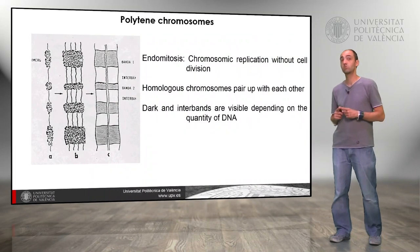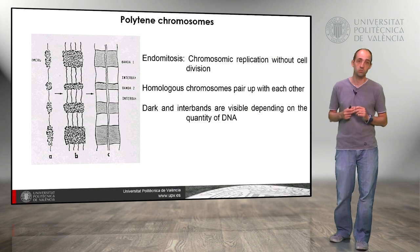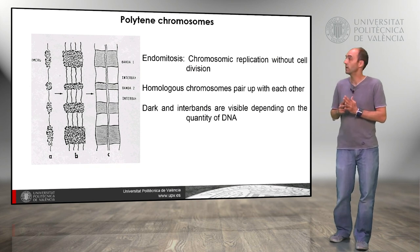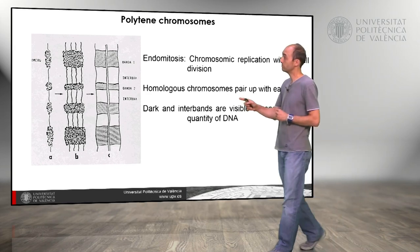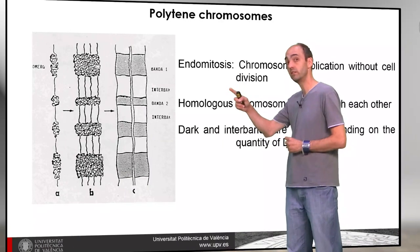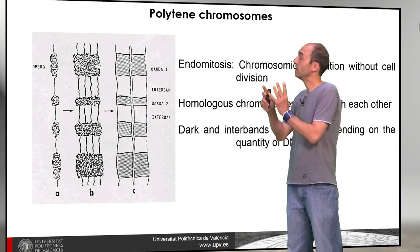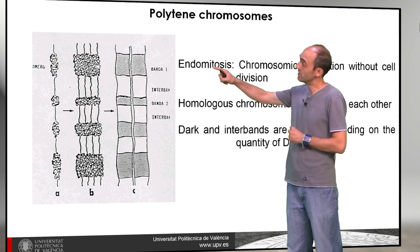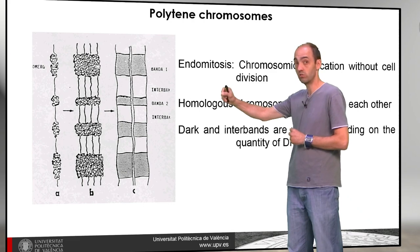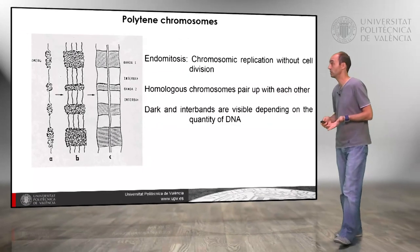The process that occurs is called endomitosis — chromosome replication without cell division. The homologous chromosomes pair with each other. We can see in this picture that the chromosomes are replicating without separating and the homologous chromosomes are paired. Furthermore, some parts of the chromosomes are condensed and some parts are not condensed, producing a characteristic pattern of bands.